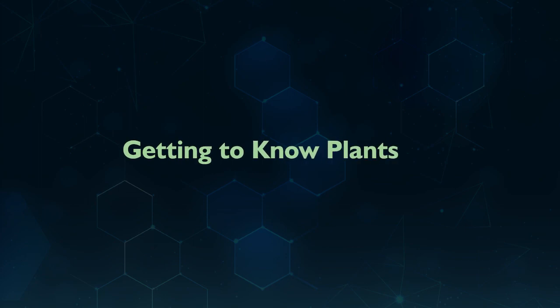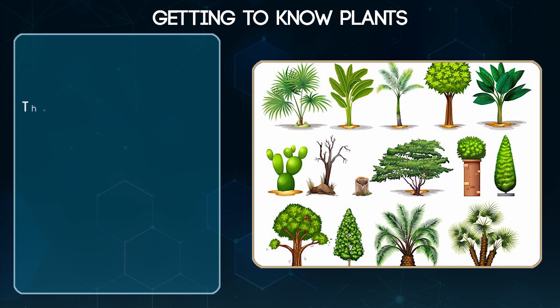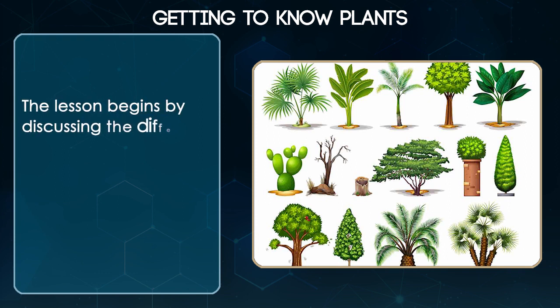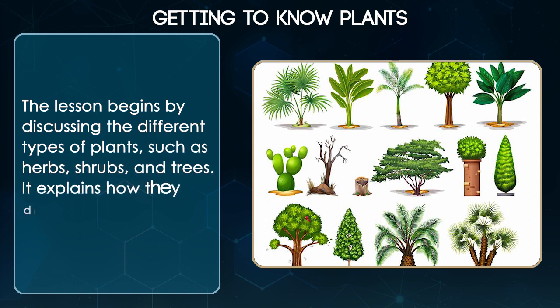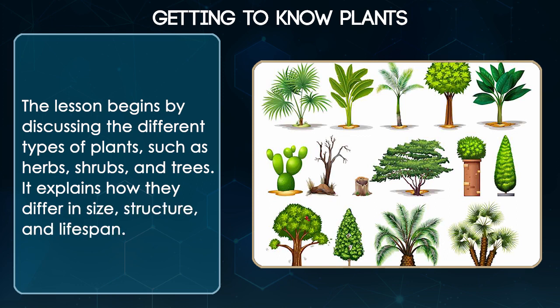Getting to know plants. The lesson begins by discussing the different types of plants such as herbs, shrubs and trees. It explains how they differ in size, structure and lifespan.